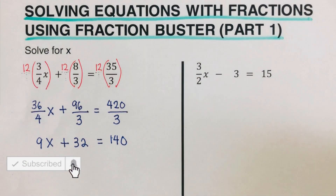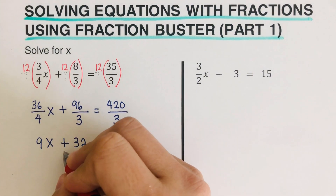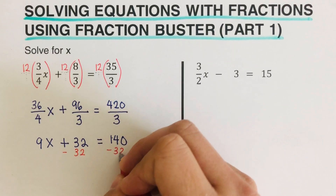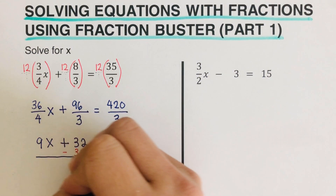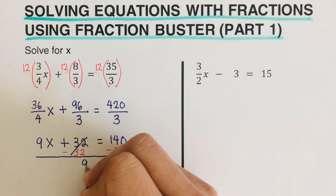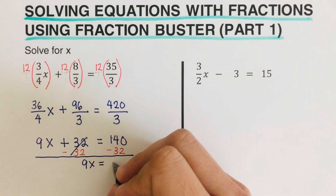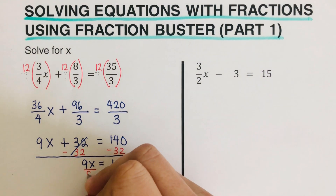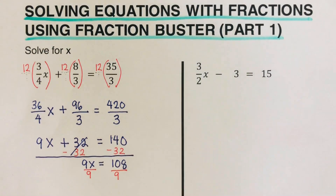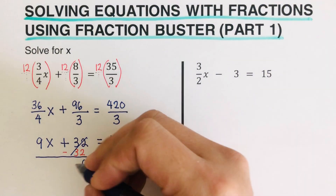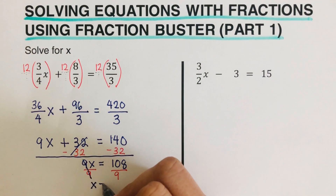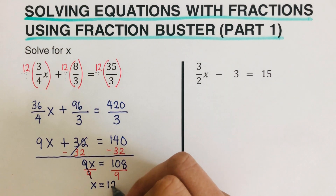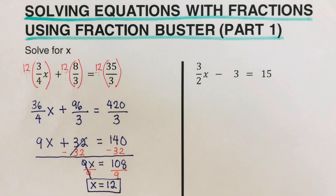At this point we have already gotten rid of the fractions. We subtract 32 from both sides, leaving 9x = 108. Since we want x by itself, we divide both sides by 9. So x = 108 ÷ 9 = 12. That is the value of x.